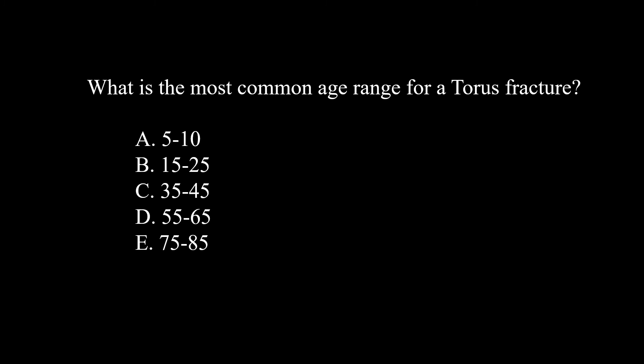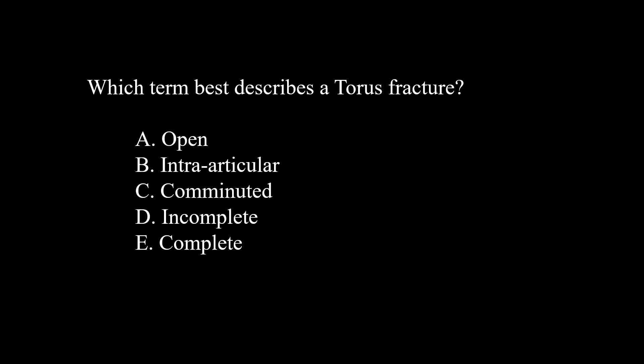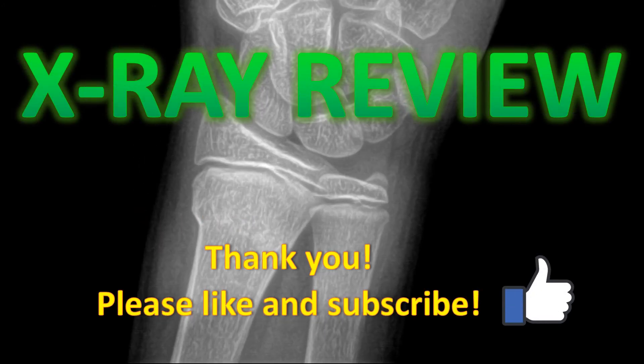Let's try a couple of questions. What is the most common age range for a torus fracture? That would be five to ten years old — remember, these are only seen in skeletally immature patients. Which term best describes a torus fracture? That would be an incomplete fracture — these are buckling or incomplete fractures where axial compressive forces cause it to collapse in on itself. There is no true complete fracture.